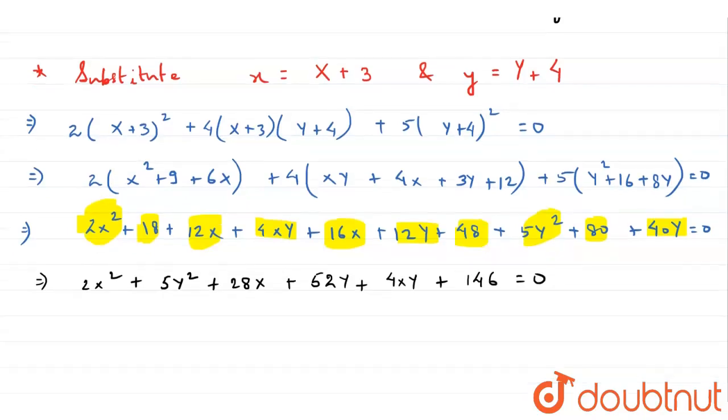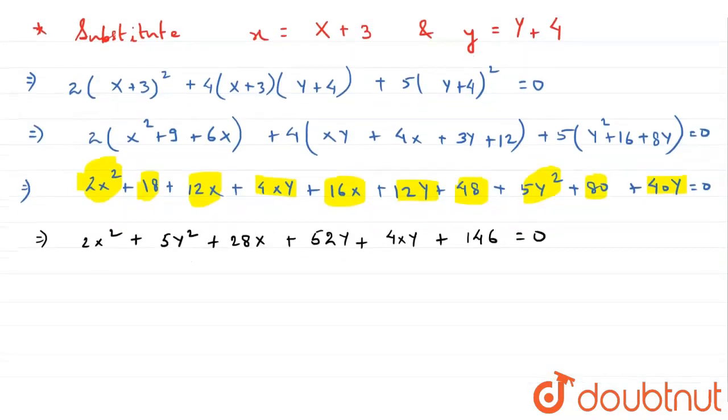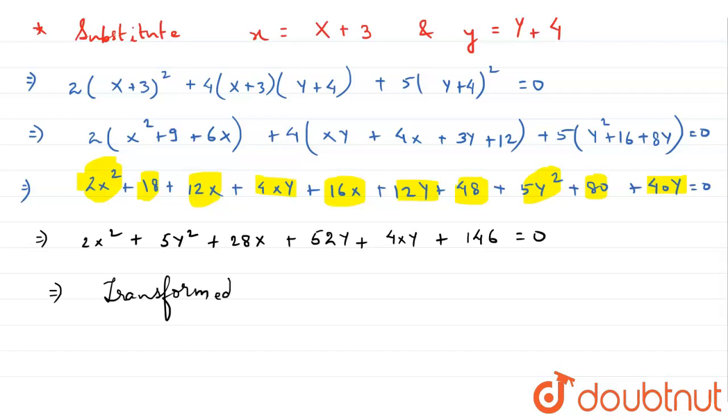So our final transformed equation will be: I will replace capital X with small x and capital Y with small y because they are variables and we can use any variable we want. So it will come out to be 2x² + 5y² + 28x + 52y + 4xy + 146 equals 0. And this equation is our answer.